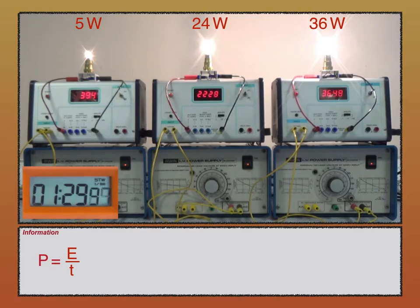If you watch the stop clock, you'll see that I switch off the power supplies at 1 minute 40. You'll also see that the 36-watt lamp glows for a fraction of a second longer. This is because of its higher temperature.